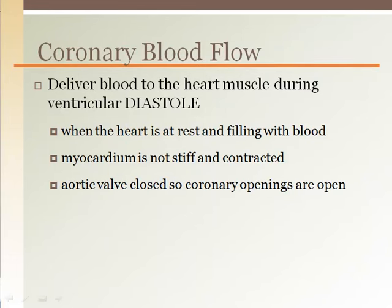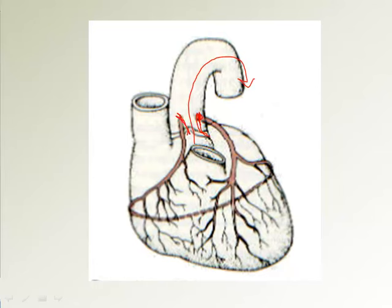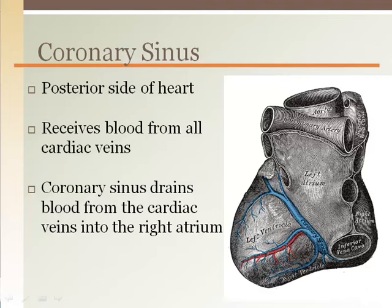It is important to note that the coronary arteries only contain blood when the heart is at rest, known as diastole. At rest, the myocardium is not stiff and contracting, so it does not close off vessels. Also during diastole, blood flow from the aorta to the coronary arteries is not blocked by the aortic valve. When the heart is contracting and ejecting blood, the aortic valve flaps rise up and cover the openings to both coronary arteries, and the stiff contracting muscle blocks the small vessels diving into the heart wall. So the heart only receives blood flow to itself while the heart muscle is at rest.